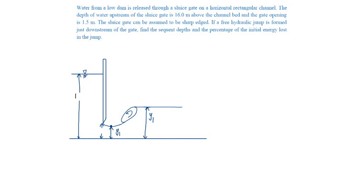Given that the depth of water level upstream is 16 meters and at the gate opening it is 1.5 meters, and a hydraulic jump is formed in the downstream of the sluice gate.